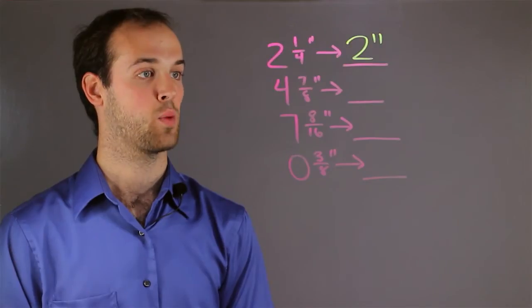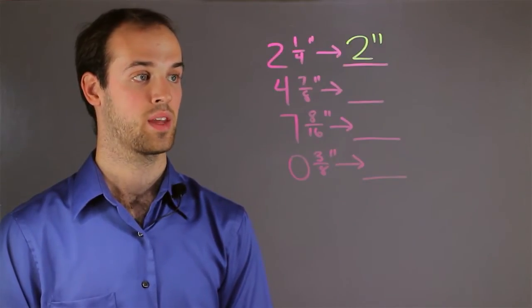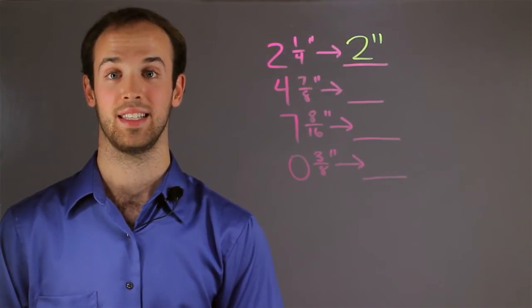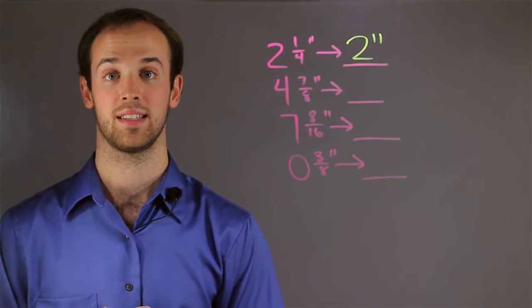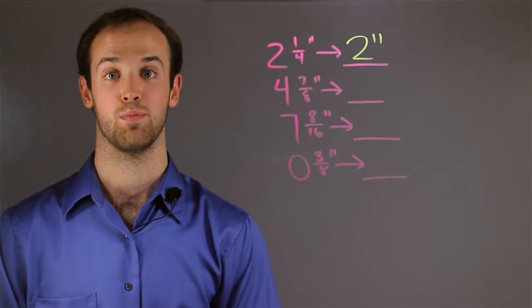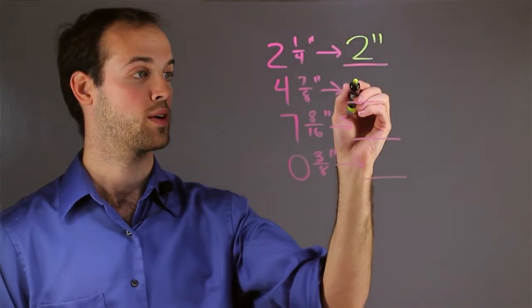The next example we have is four and seven eighths of an inch. What does that round to? Again we want to look at the fractional part and we see that it's seven eighths. Since I know that four eighths must be half, I know that seven eighths is more than half, so this is going to round up. So four rounds up to five.